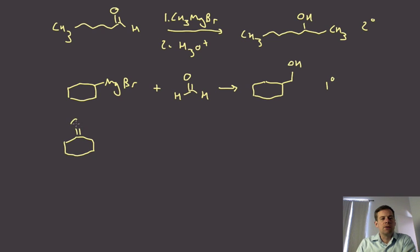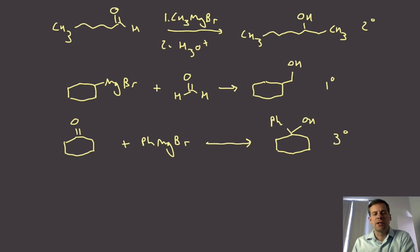If I add to a ketone, and I'll just pick, I'll just pick phenyl Grignard in this case, followed by the workup, what I'll generate is this molecule. And you can see here that that is a tertiary alcohol. So addition to ketones gives us tertiary alcohols.